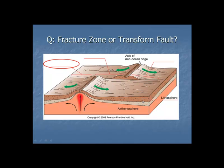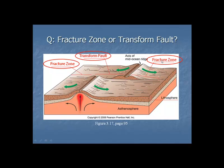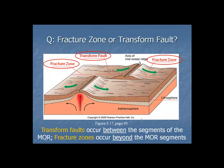Here's a little quiz — fracture zone or transform fault? What is this segment here? That's a fracture zone. What about this one here — fracture zone or transform fault? That's a transform fault. What about this part here? Fracture zone or transform fault? There it is — and there's the diagram in your book that shows it. A good way to think about this is that transform faults occur in between the segments of the mid-ocean ridge. They're offsetting, bisecting, displacing the mid-ocean ridge, but they only occur there. Fracture zones, on the other hand, occur beyond or outside the mid-ocean ridge segments. That's a good way to think about them.